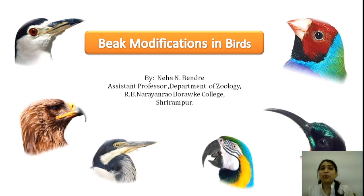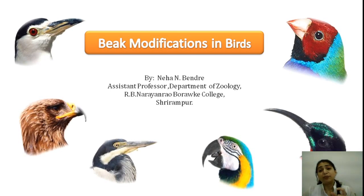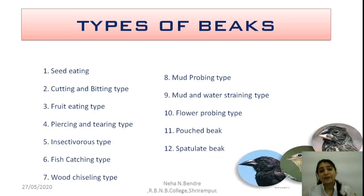These adaptations are very diverse according to their feeding patterns. Depending upon the feeding patterns, there are different types of beaks, ranging from short to slightly short beaks to sharp beaks.